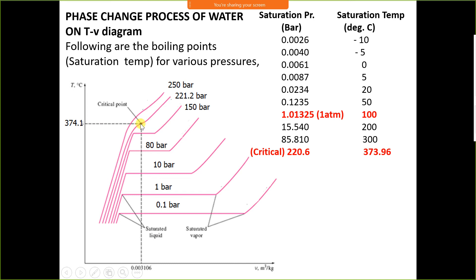Latent heat equal to zero means the water will not boil. At 221.2 bar, water directly converts into vapour without boiling — but this only occurs when the temperature is also 374.14 degree Celsius. Both the critical pressure and critical temperature must be satisfied simultaneously.